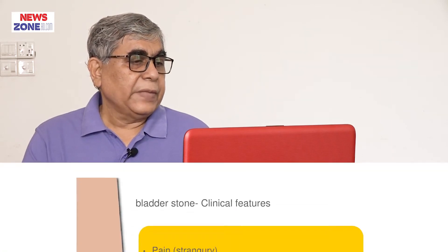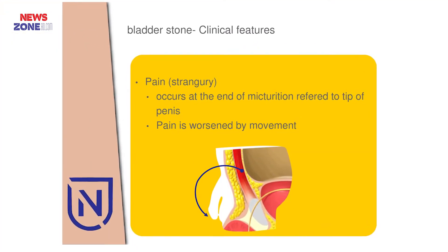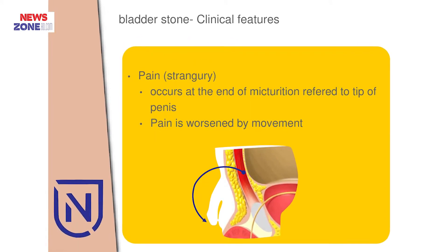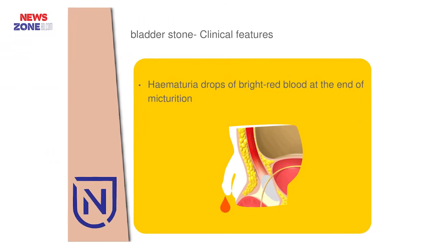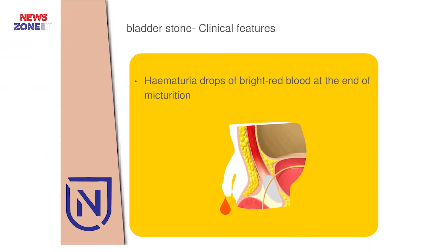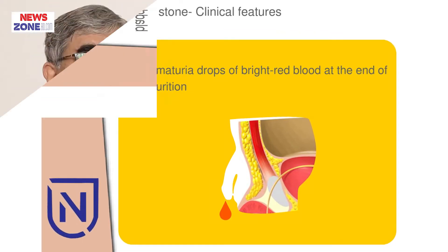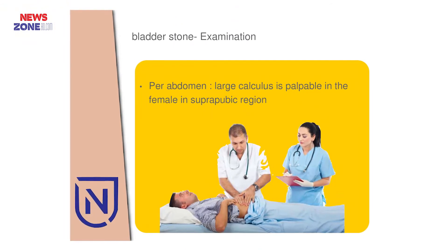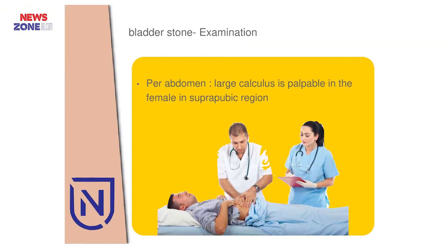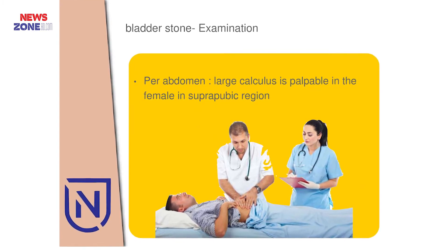The presenting features of bladder stones are: pain at the end of micturition referring to the tip of the penis, interruption of the urinary stream, and UTI. When we suspect this from the patient's complaints, we move to investigations. On physical examination, if the patient is lean and thin and the stone is large, we may palpate it on abdominal examination, but this is not usual.